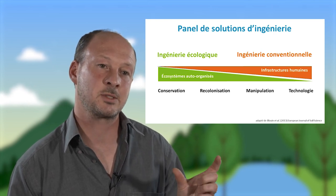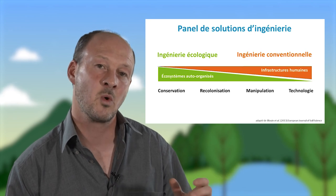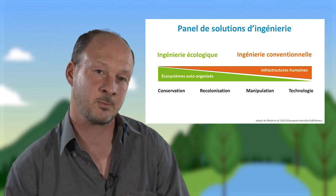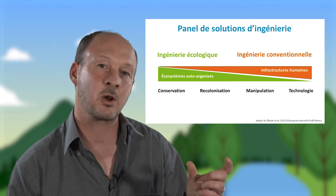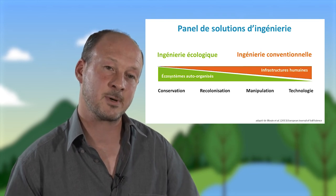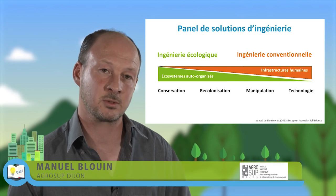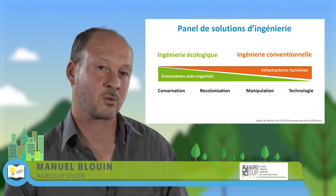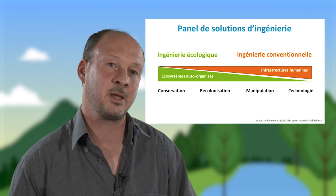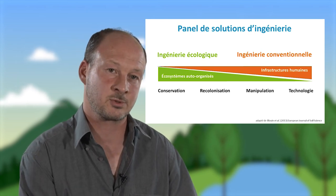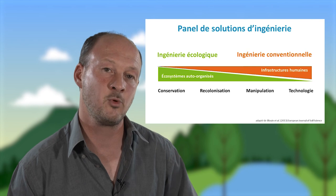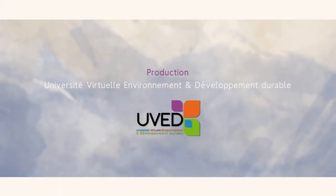Quand on réfléchit au choix entre ingénierie écologique et ingénierie conventionnelle, on peut espérer substituer des solutions écologiques aux solutions conventionnelles dans un maximum de cas, mais ce n'est pas toujours possible et il faut parfois réfléchir à leur complémentarité. En fonction de l'espace disponible — car les solutions d'ingénierie écologique nécessitent souvent beaucoup d'espace — de la nature du risque (quand le risque est très élevé, on fait davantage confiance à l'ingénierie conventionnelle) et du coût des infrastructures humaines (quand il est très élevé, on se reporte sur l'ingénierie écologique), on peut ainsi faire les choix les plus pertinents.